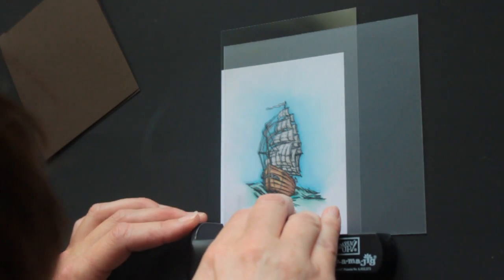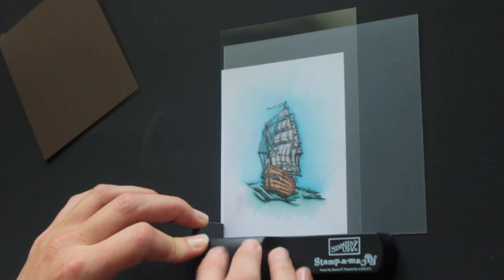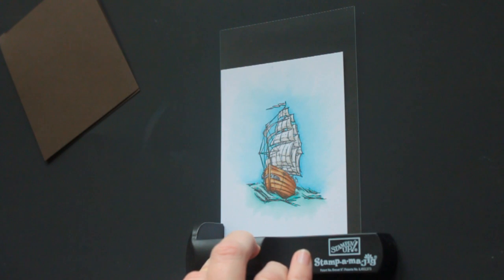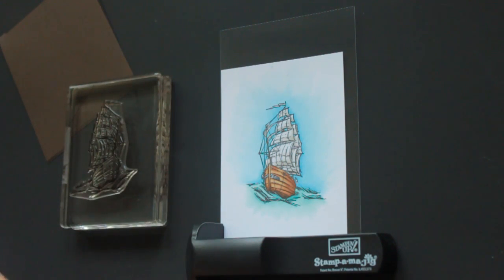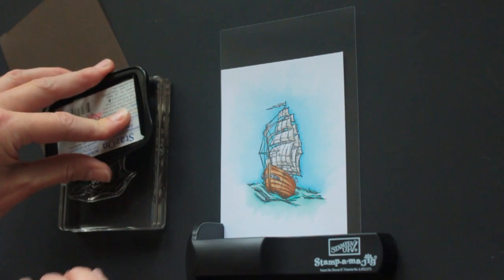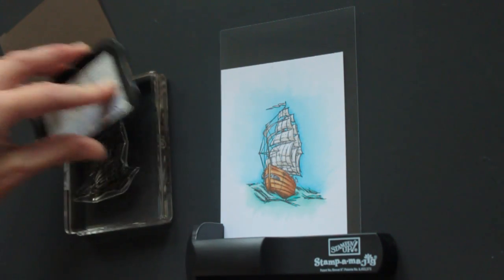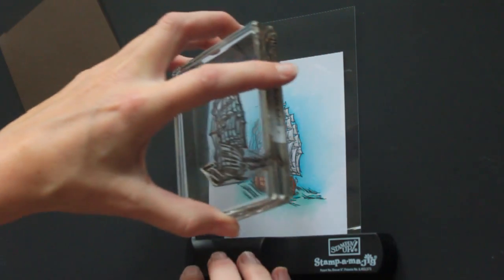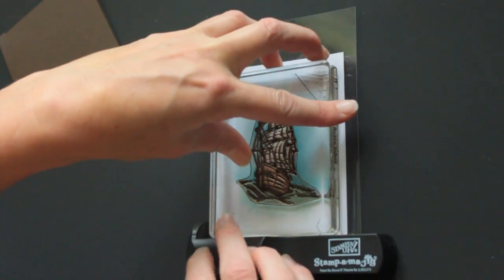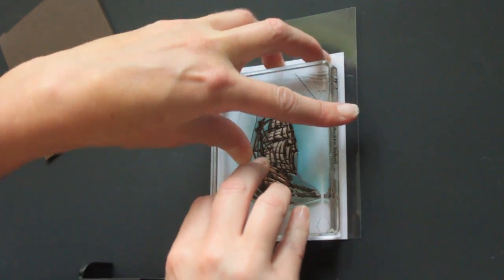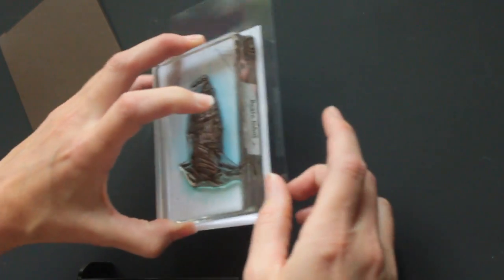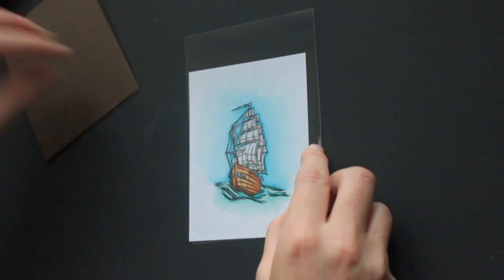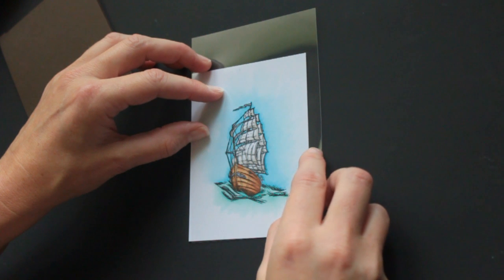I line the stamp-a-ma-jig up with my plastic stamp-a-ma-jig, ink up my stamp, this time with StazOn. It's a solvent ink that will dry on plastic. And again, line it up with the corner of the stamp-a-ma-jig and stamp. Stamped really light, but it will work just to show.